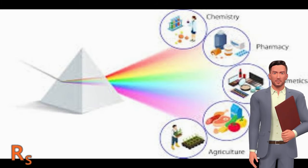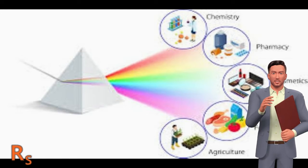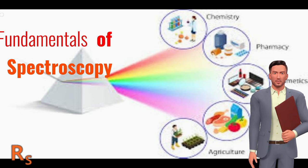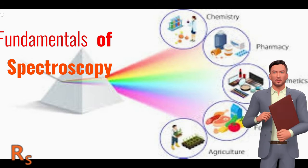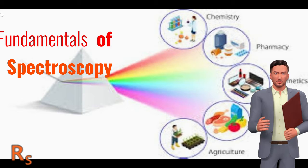Fundamentals of spectroscopy. Spectroscopy is the study of the interaction of light electromagnetic radiation with matter. Electromagnetic radiation covers a wide range of frequencies from gamma rays to radio frequencies.